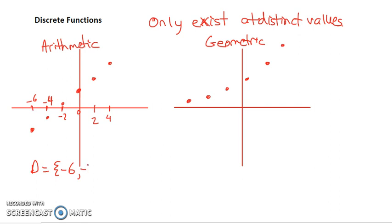So you could just go ahead and list it as negative 6, negative 4, negative 2, 2, 4, and it also exists at 0. So we'll put that in there as well.